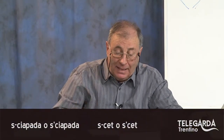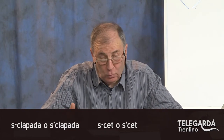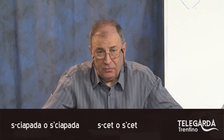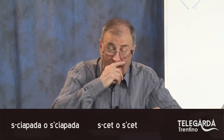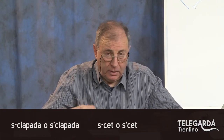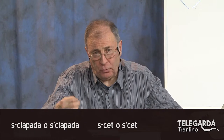Andiamo avanti: 'sciapada', 'sciop', 'scet'. Come va scritto? Floriani non mette né apostrofo né trattino fra la S e la C. La maggior parte dei poeti, tanti poeti dialettali del Trentino, lo stesso Fox sulla sua grammatica dialettale, dice che 'sciapada' va scritta o S-trattino-C o S-apostrofo-C. La stessa cosa per 'scet' e 'sciop'.